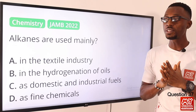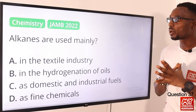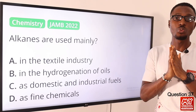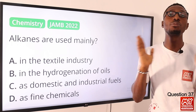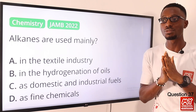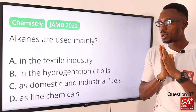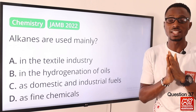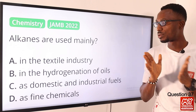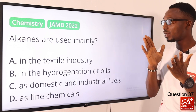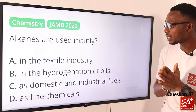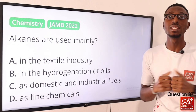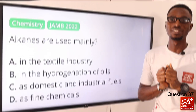Question 37. Alkanes are mainly used as what? This is a question we should be able to respond to conveniently. Basically, alkanes are used as fuel — either domestic or industrial. So this is the correct option — option C is the right option.